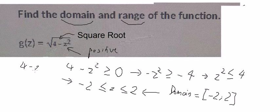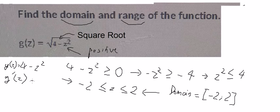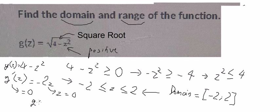So we have 4 minus z squared, and we take the first derivative of this. So you get the first derivative f'(z) equals negative 2z. Then we set this equal to 0, so z equals 0.